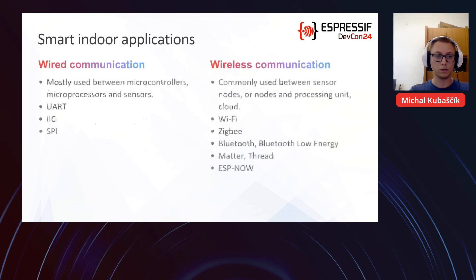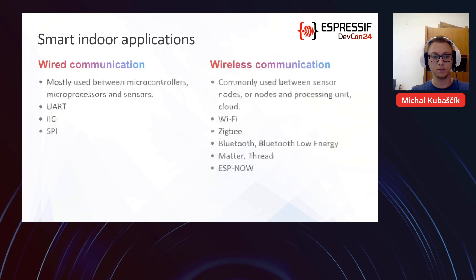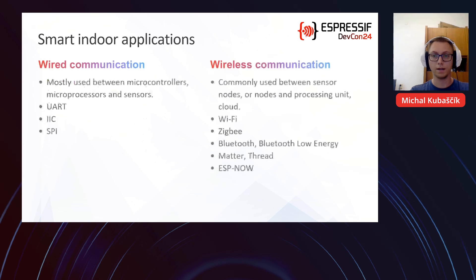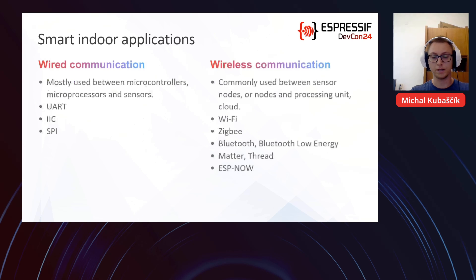We can use wired or wireless communication. Wired communication is mostly used between microcontrollers or microprocessors and sensors — it can be UART, I2C, or SPI. Wireless communication is used between sensor nodes and processing unit, and between processing unit and cloud. Mostly used protocols are Wi-Fi, ZigBee, Bluetooth or Bluetooth Low Energy for low power applications, then Matter, Thread, and ESPNOW.